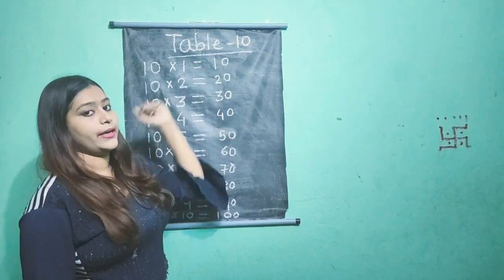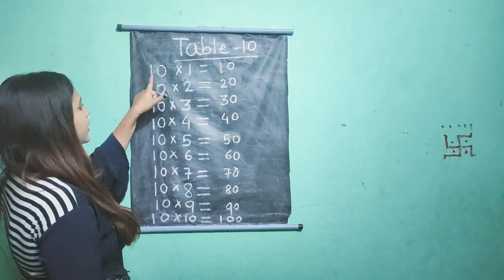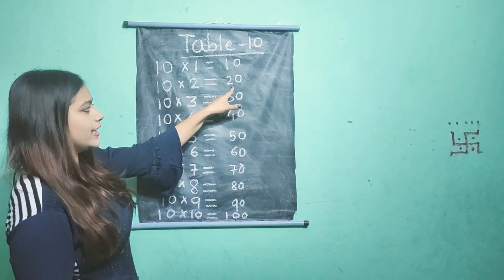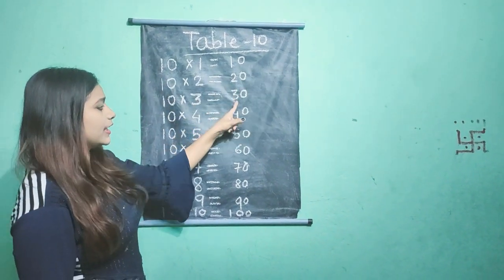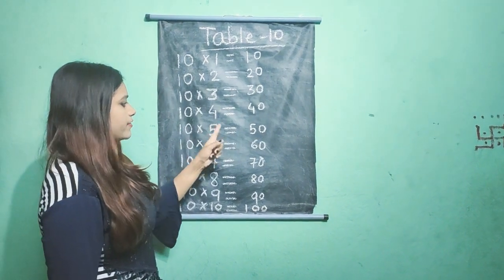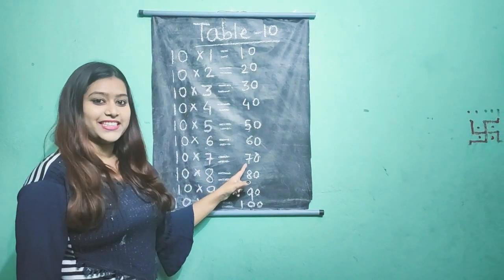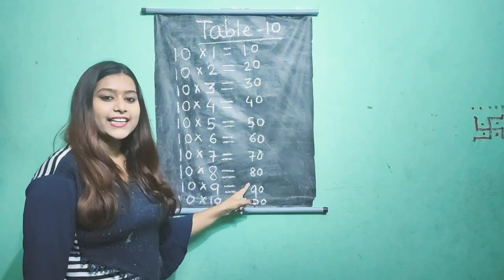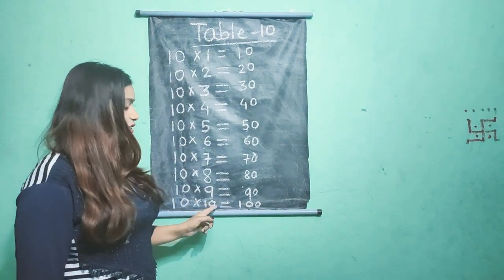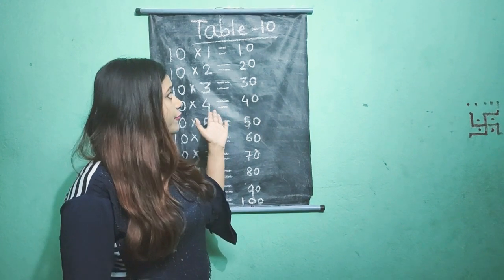Now table 10. Now we will learn table 10. 10 ones are 10, 10 twos are 20, 10 threes are 30, 10 fours are 40, 10 fives are 50, 10 sixes are 60, 10 sevens are 70, 10 eights are 80, 10 nines are 90, 10 tens are 100. So this is the table of 10.